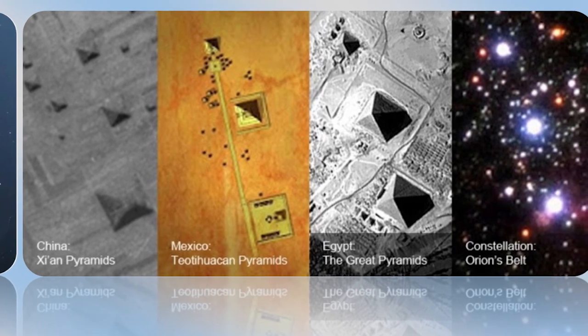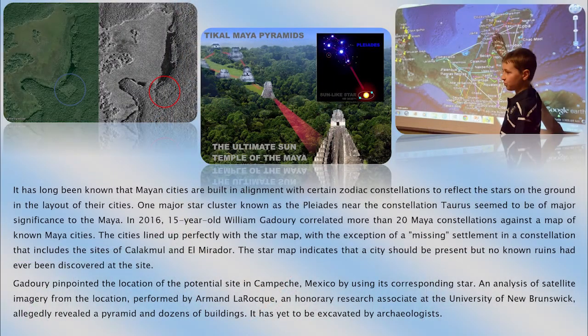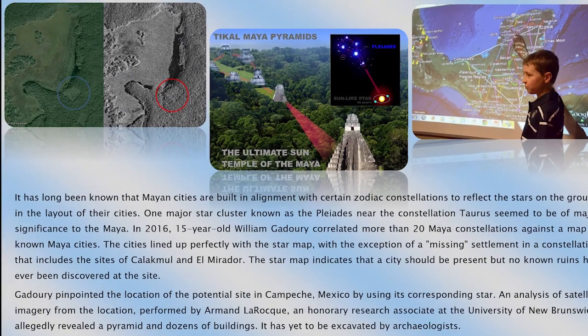In my other video, Origins of Ancient Astronaut Theory, I go over some of the authors that first put these ideas out there and some of their books you can read to get more information on how these structures are aligned to the stars. It has long been known that Mayan cities are built in alignment with certain zodiac constellations to reflect the stars on the ground in the layout of their cities.